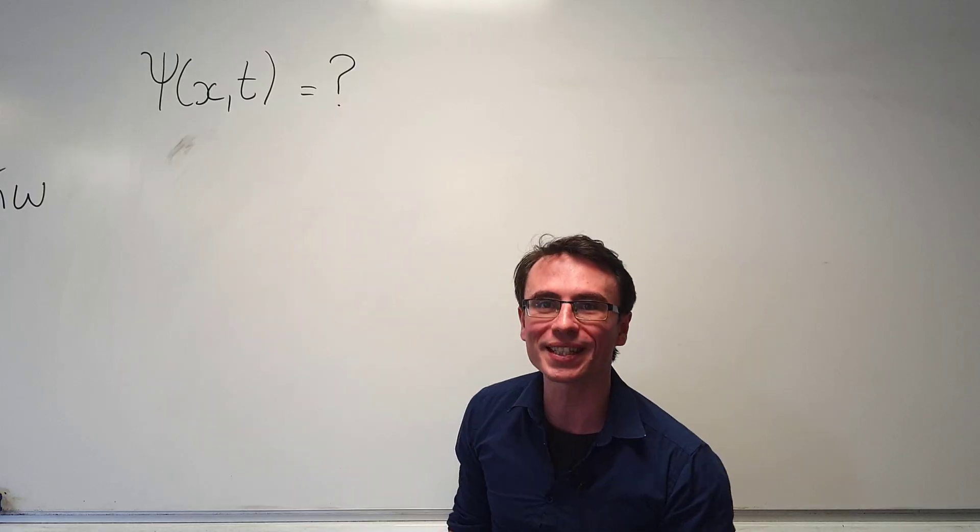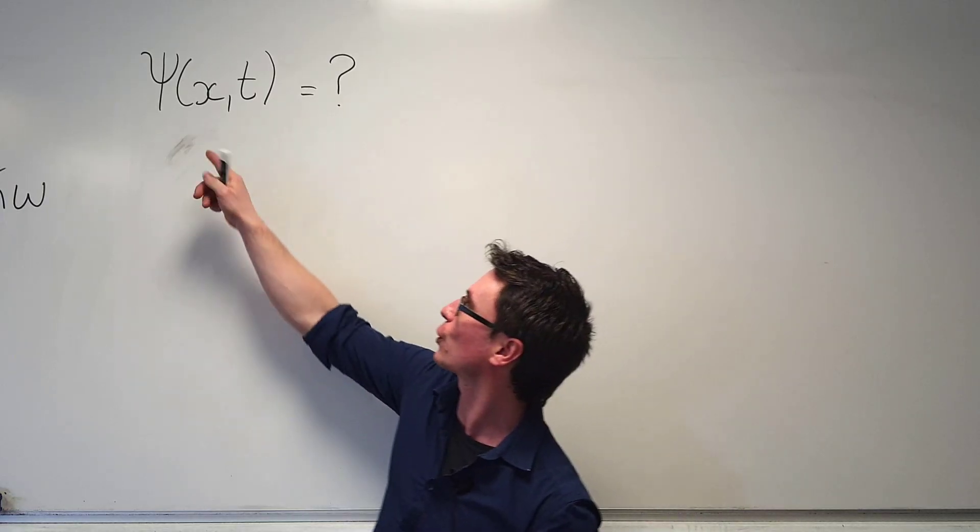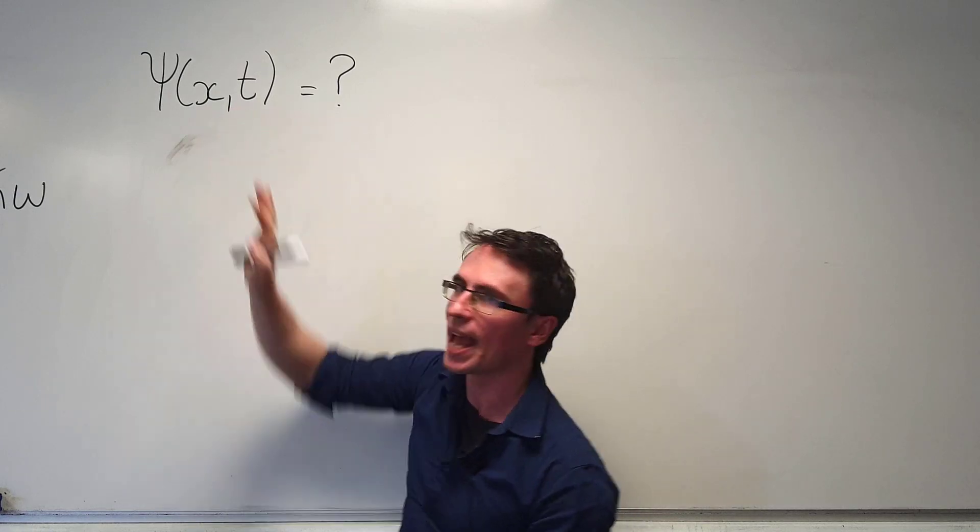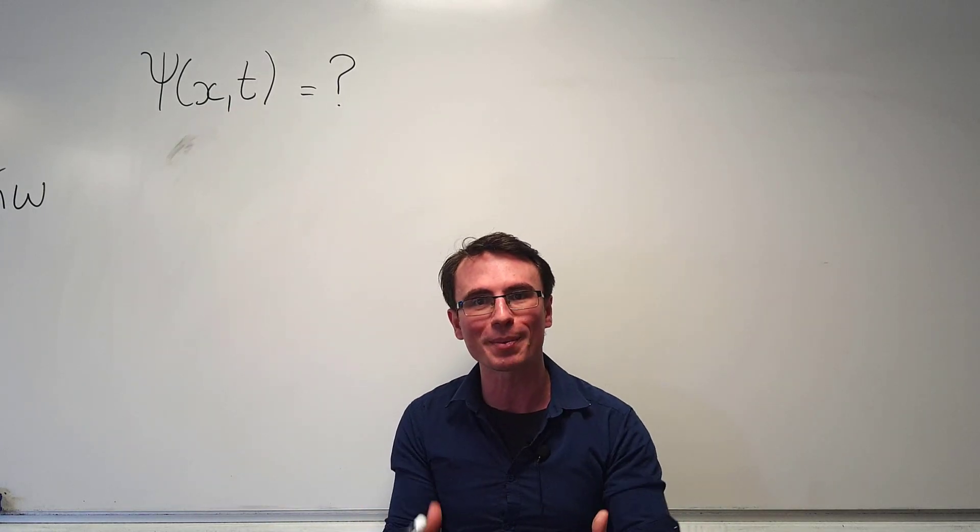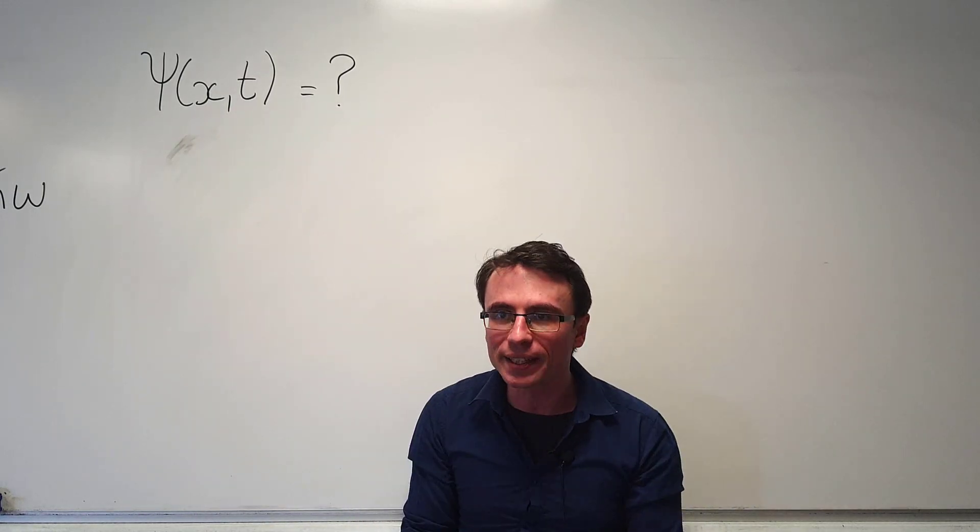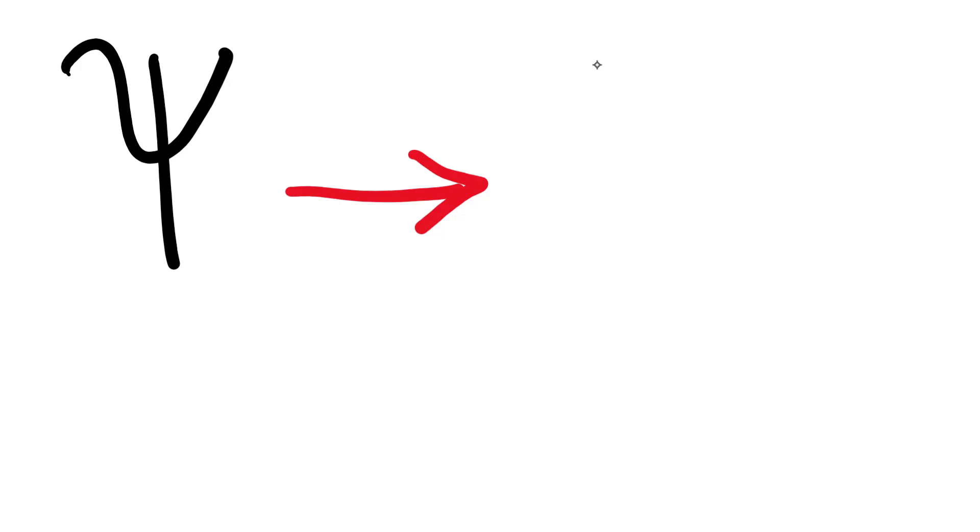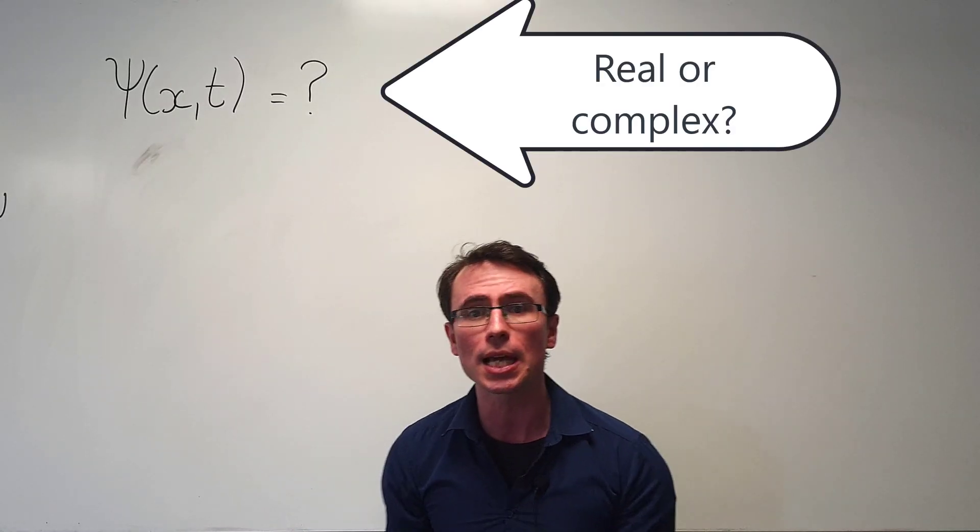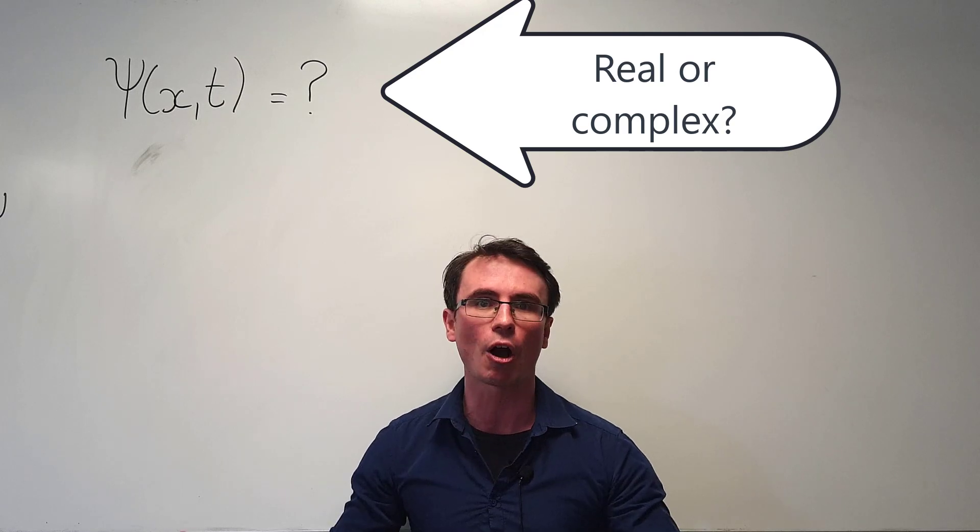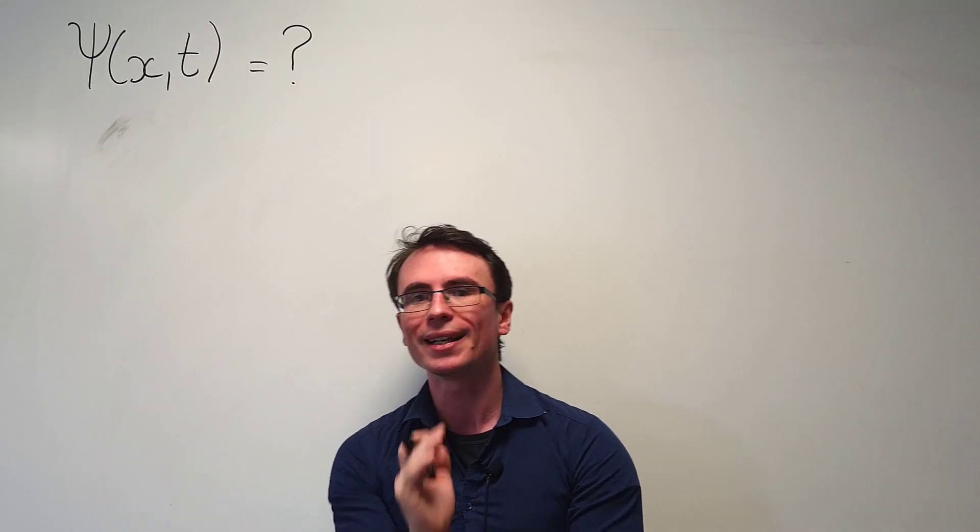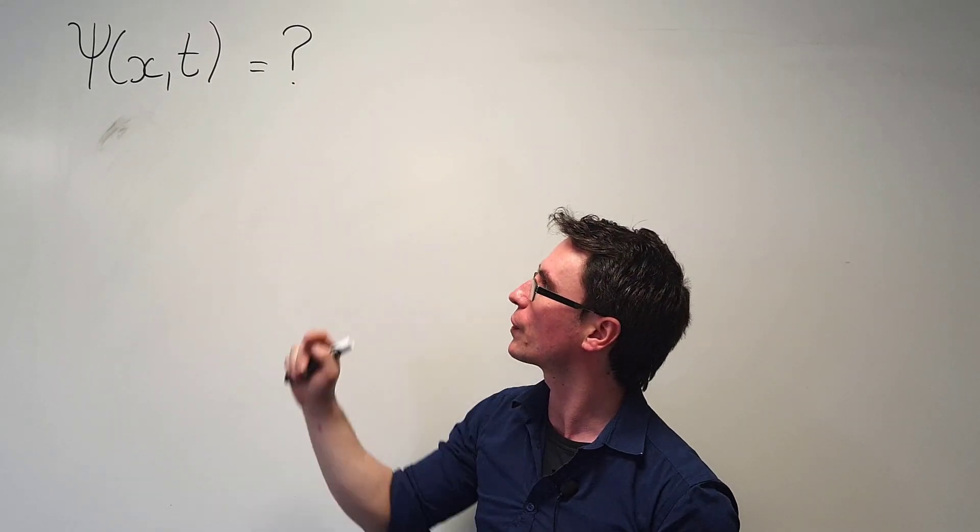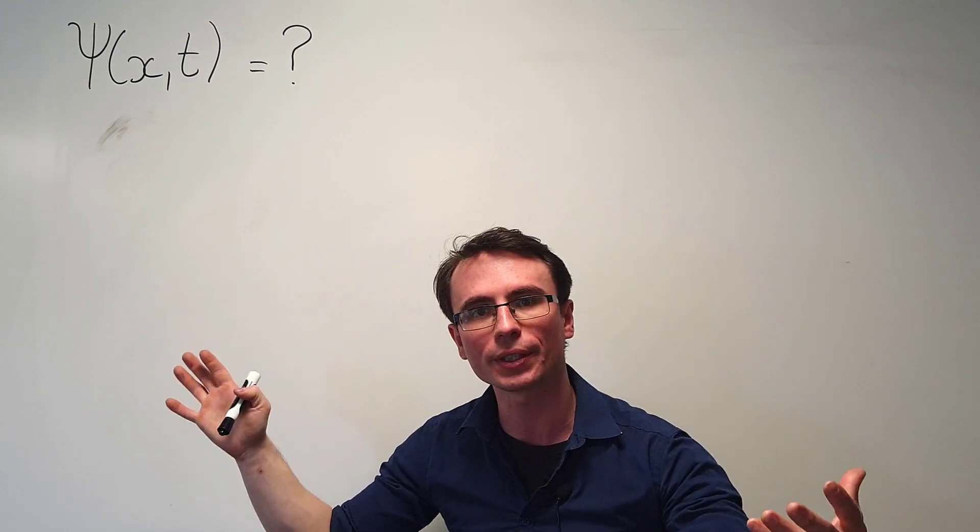This quantity known as the wave function is a function of both position and time, and it's used in quantum mechanics to predict the values of important quantities such as the momentum, the energy, or the position of particles. Now is this quantity here real or complex? What is the equation that actually governs this quantity?